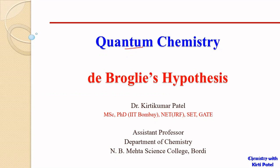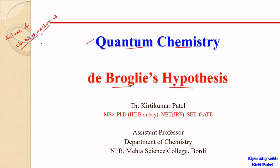Welcome students to our new lecture on quantum chemistry. Today we will be discussing de Broglie's hypothesis. In our previous lectures we had seen the reasons for failure of classical mechanics and how quantum mechanics could explain certain experiments like the photoelectric effect or black body radiation experiments, which were being explained very nicely by quantum mechanics but where classical mechanics failed to explain the observations.